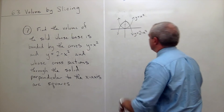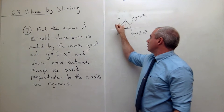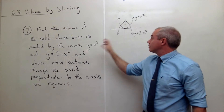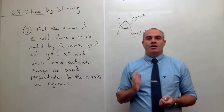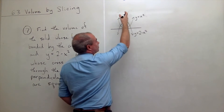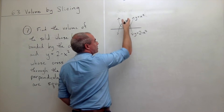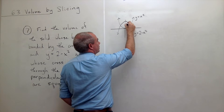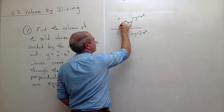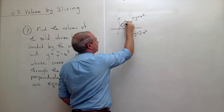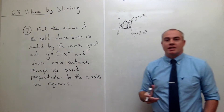I went ahead and made a picture of the base region — the region bounded by these two parabolas. The cross-sections perpendicular to the x-axis are squares, meaning that if I took a slice of the object sitting over this region, perpendicular to the x-axis, I would get a square. Every slice I make on this thing is a square.